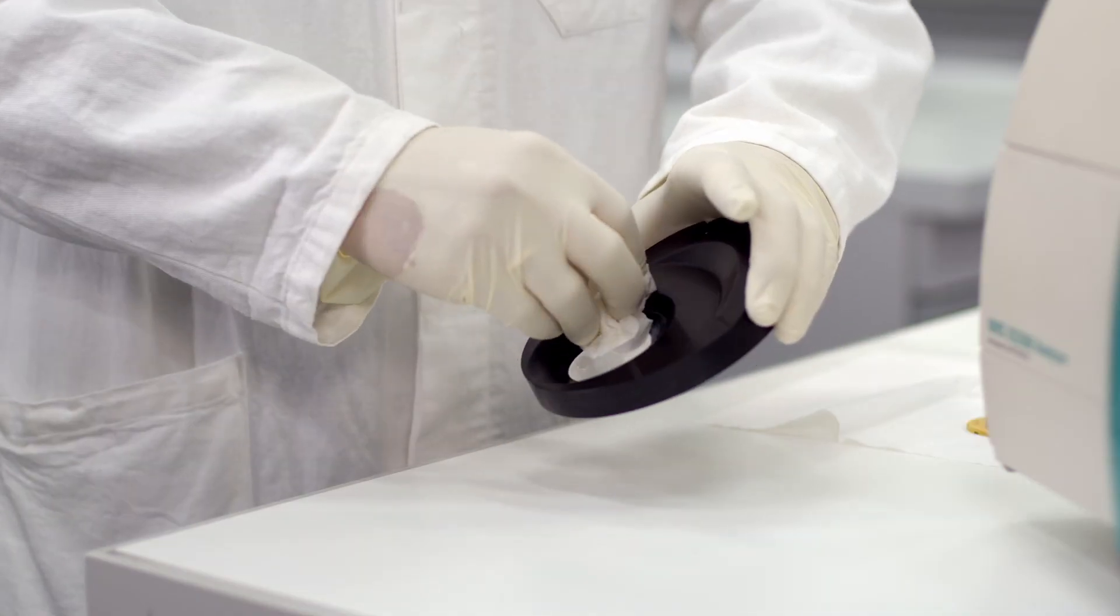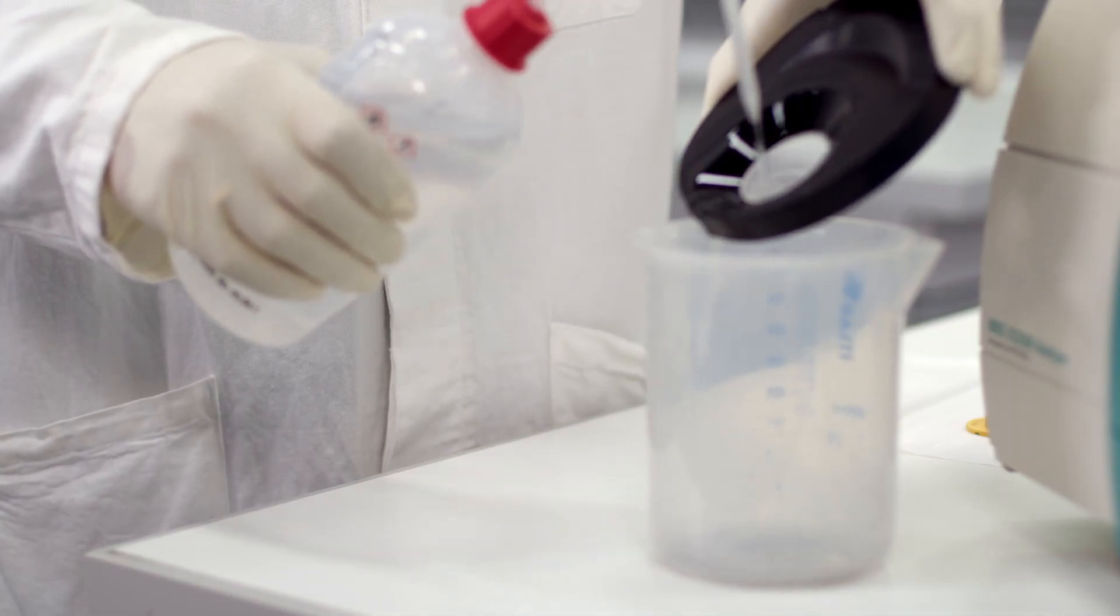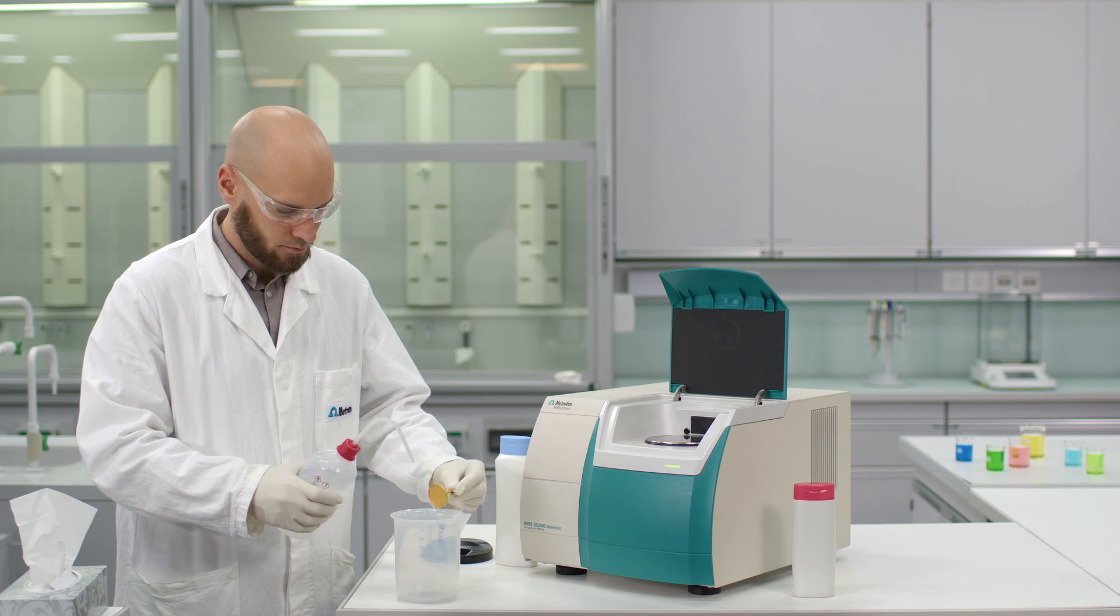Cleaning the slurry cup is very easy. Just remove the sample by wiping with some tissue paper and rinse the slurry cup with ethanol. Then you can use it to analyze other samples.